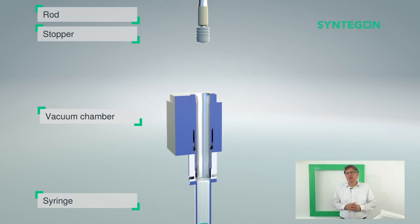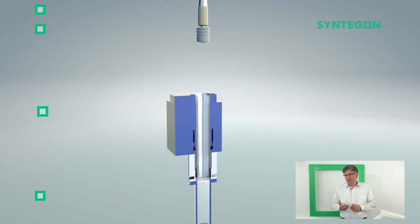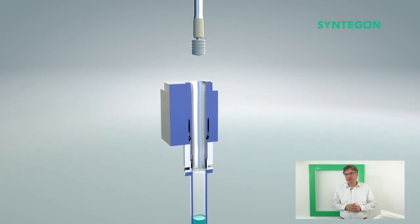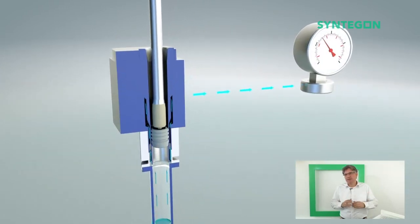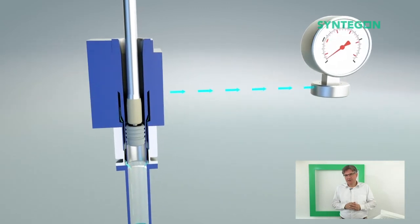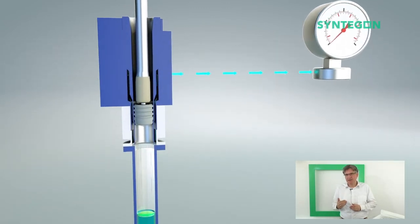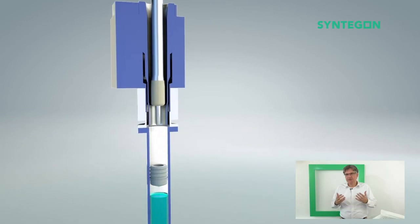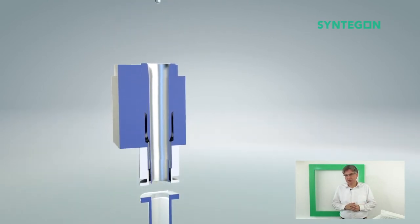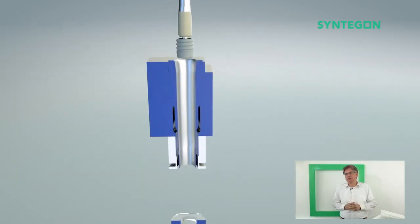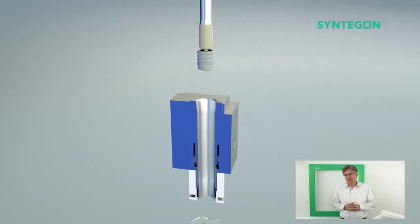And now I will explain to you how the process works. The stopper is pushed by the rod into the vacuum chamber. Then the vacuum is applied between the stopper and the fill level. As soon as the right vacuum pressure is reached, the rod pushes the stopper into the syringe.